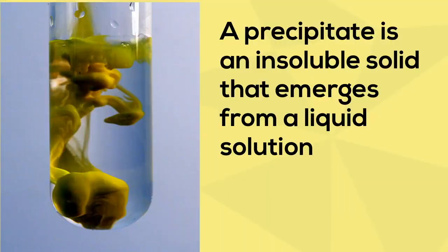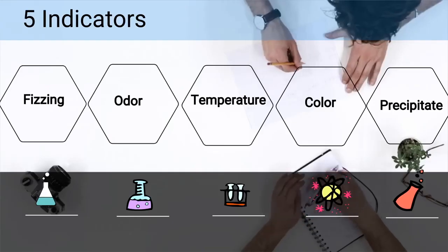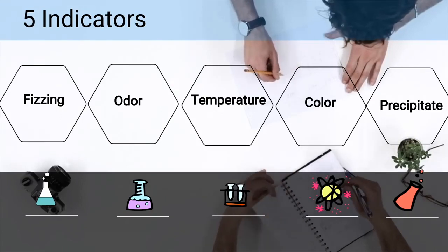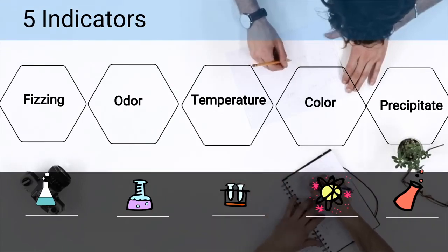And finally, a precipitate is created. A precipitate is a solid that settles after mixing certain liquids. So there we go — the five indicators of a chemical reaction.